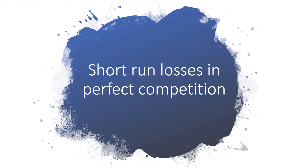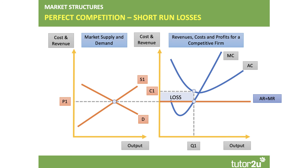Prices are essentially competing away the profits. Now, what about firms making a loss in the short run in perfect competition? If most firms are loss-making and not covering their costs, here's a scenario where the price P1 is insufficient to cover the unit cost of production. Hence, that blue shaded area is the loss per unit multiplied by output.